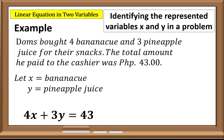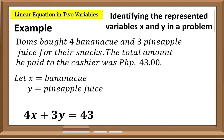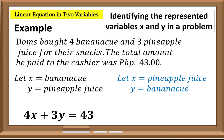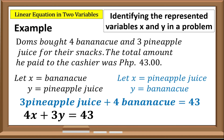The other possible representation is: if we let x represent pineapple juice and y represent banana-q, then 3 pineapple juice plus 4 banana-q equals 43, giving us the equation 3x plus 4y equals 43.